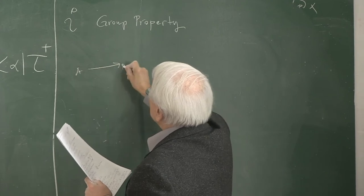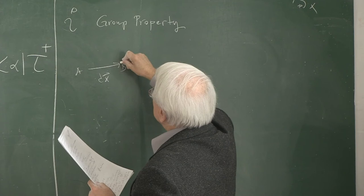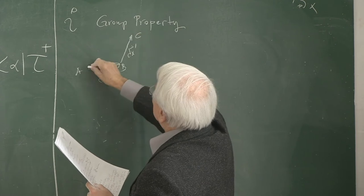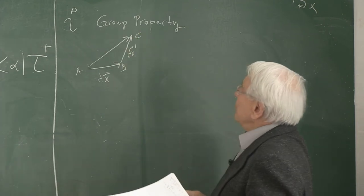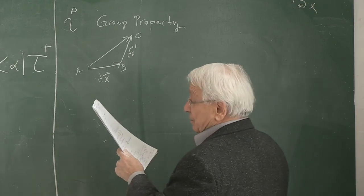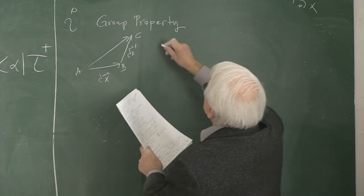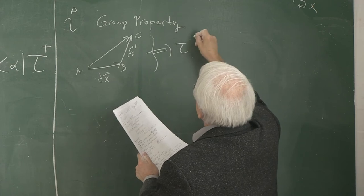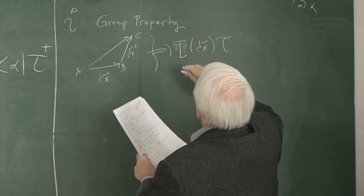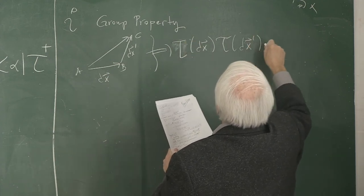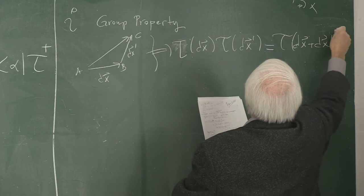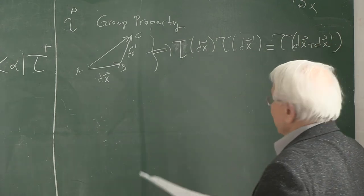The second property is the so-called group property: two combined translations is equivalent to a single translation. That is, if I go from a to b via a dx translation and then a dx′ translation to c, I could also go from a to c directly. Written mathematically: T(dx′) T(dx) = T(dx + dx′).